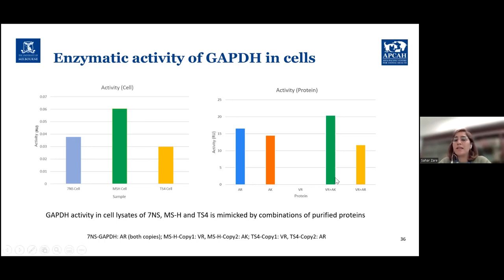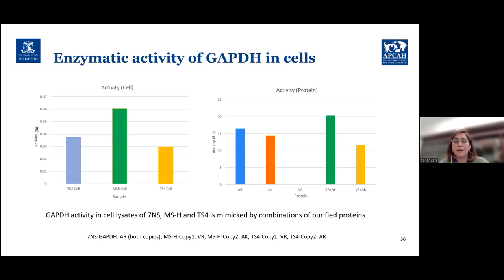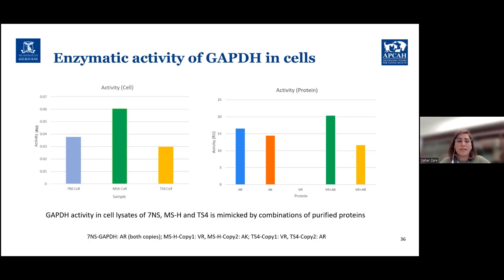This is really interesting: if the MSH combination of VR and AK produces higher activity than even the wild type, why did the field re-isolate revert the hyperactive AK to AR — the wild type — which causes lower activity? It seems the bacteria prefer lower activity over hyperactivity. Perhaps the hyperactivity of this gene is toxic for the cell, or produces something toxic, so it is preferred to revert and have lower activity.